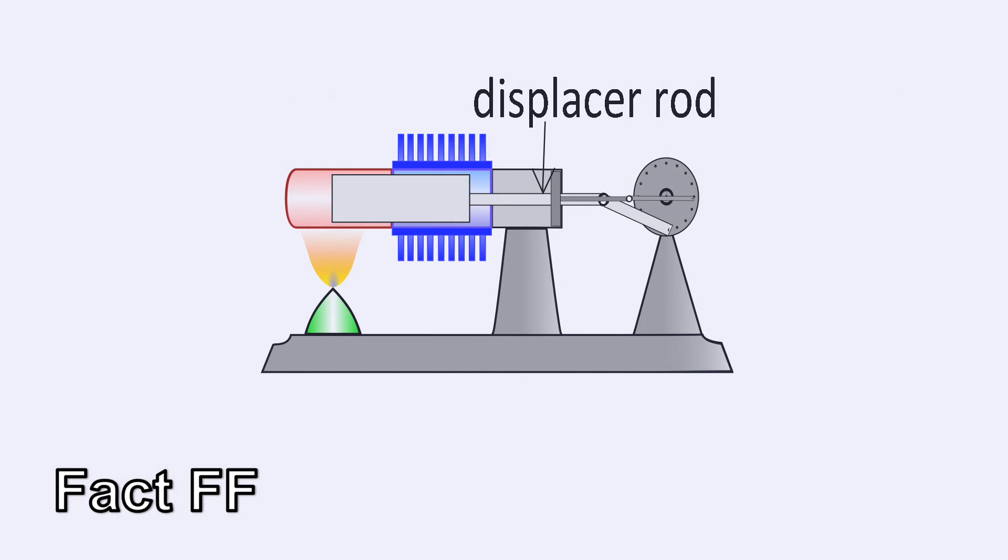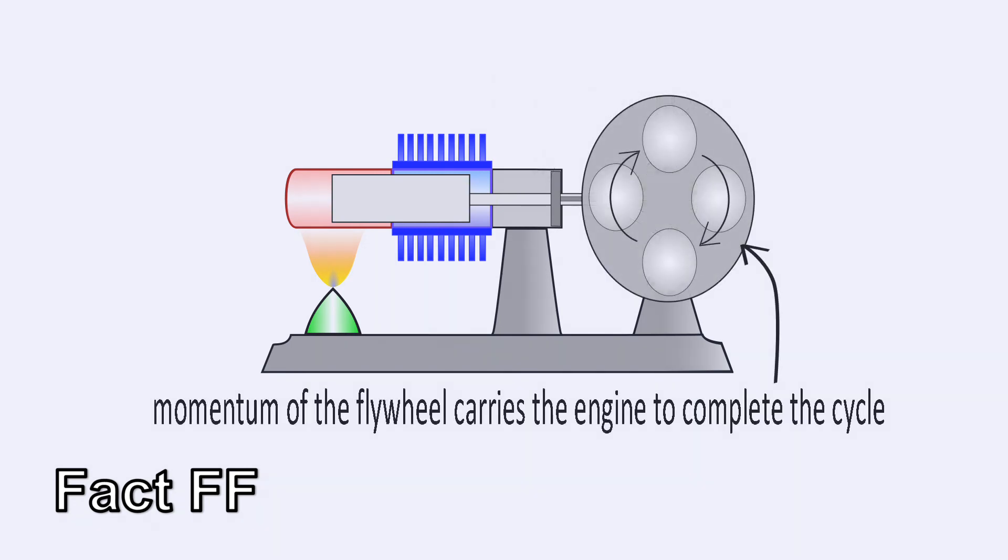The displacer rod passes through the power piston. The momentum of the flywheel carries the engine to complete the cycle.